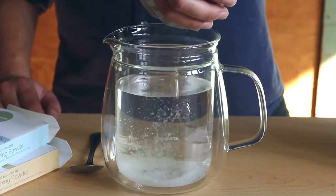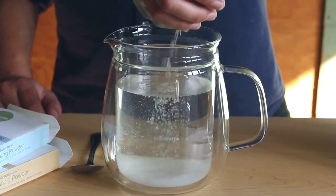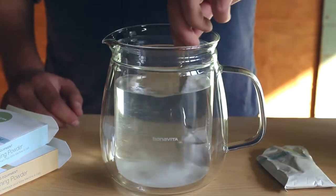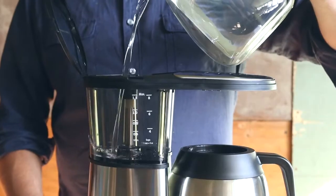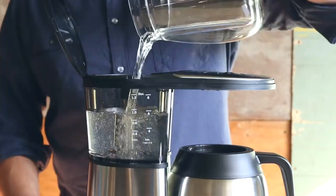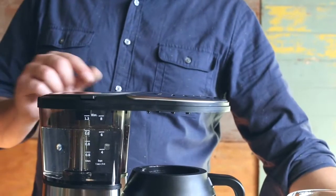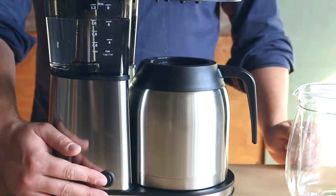Pour one packet of the descaling powder into 32 ounces of water and stir until the powder dissolves. Pour the mixture into the water reservoir and turn on the brewer for a full cycle using the carafe or a bowl to capture the water.